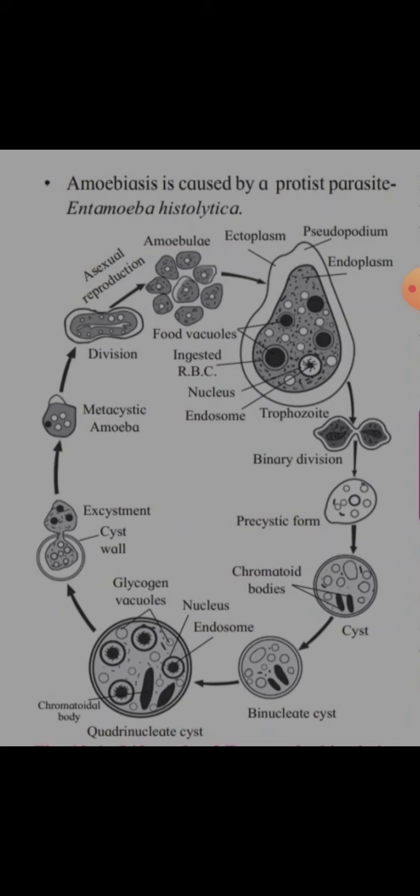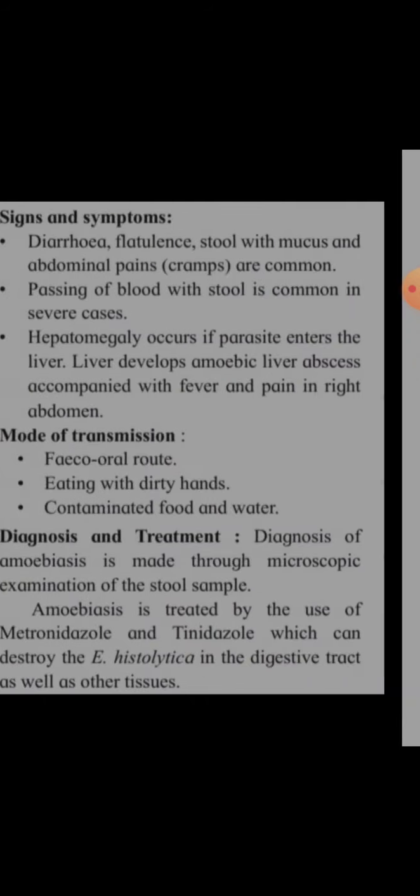A cyst wall forms around it, and it will break open, releasing the metacystic amoeba again. It will undergo asexual reproduction and this cycle will continuously go on.